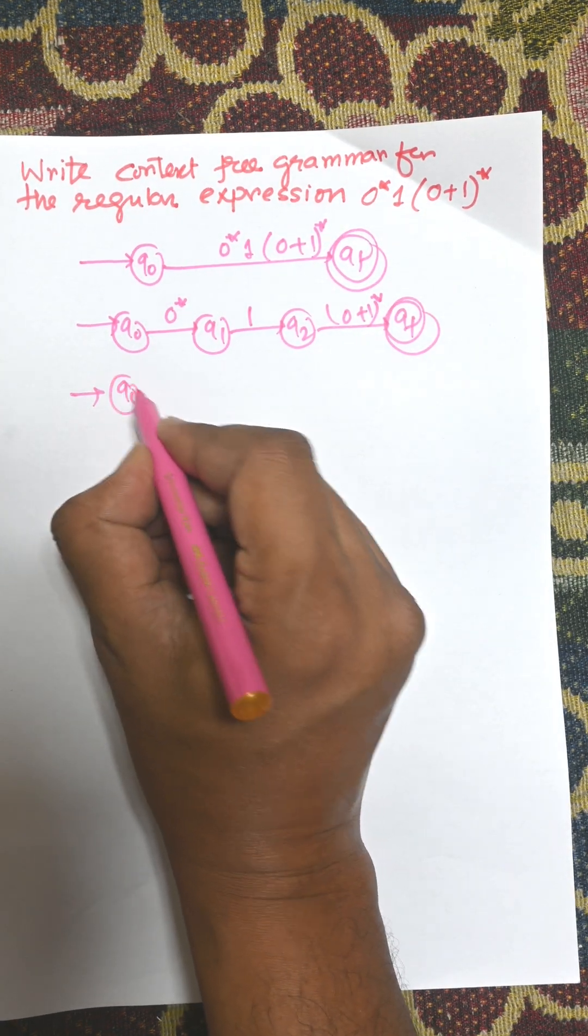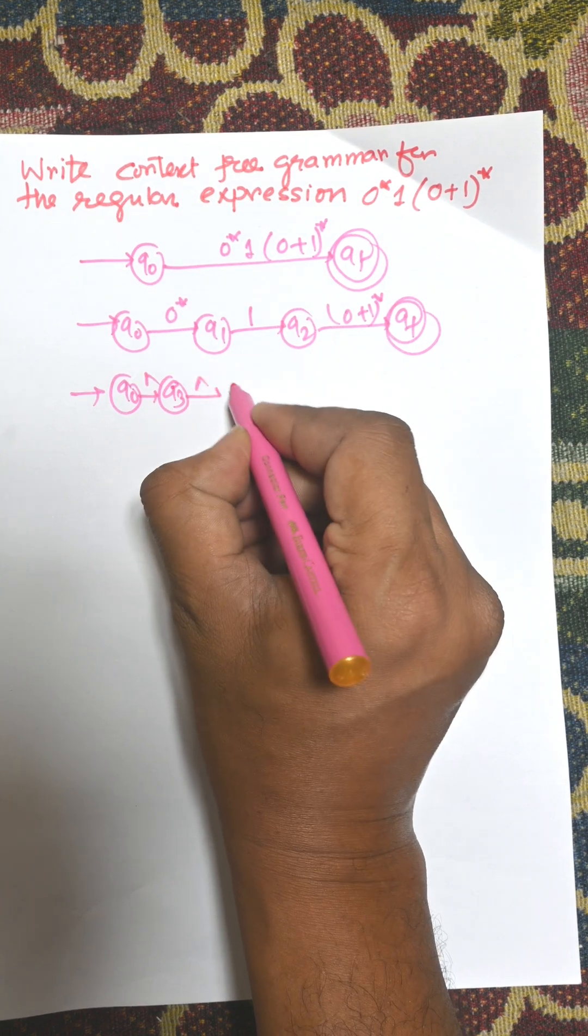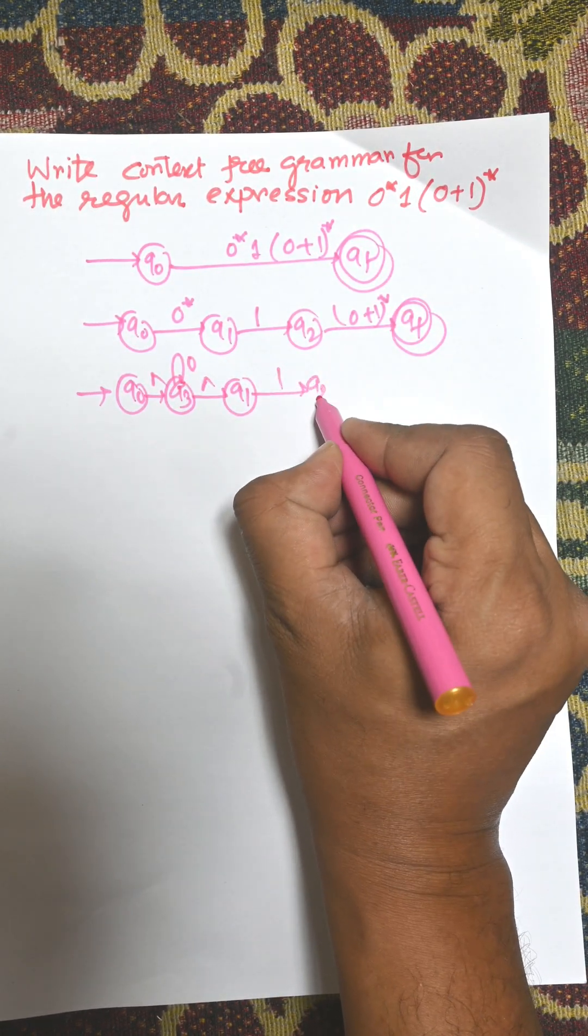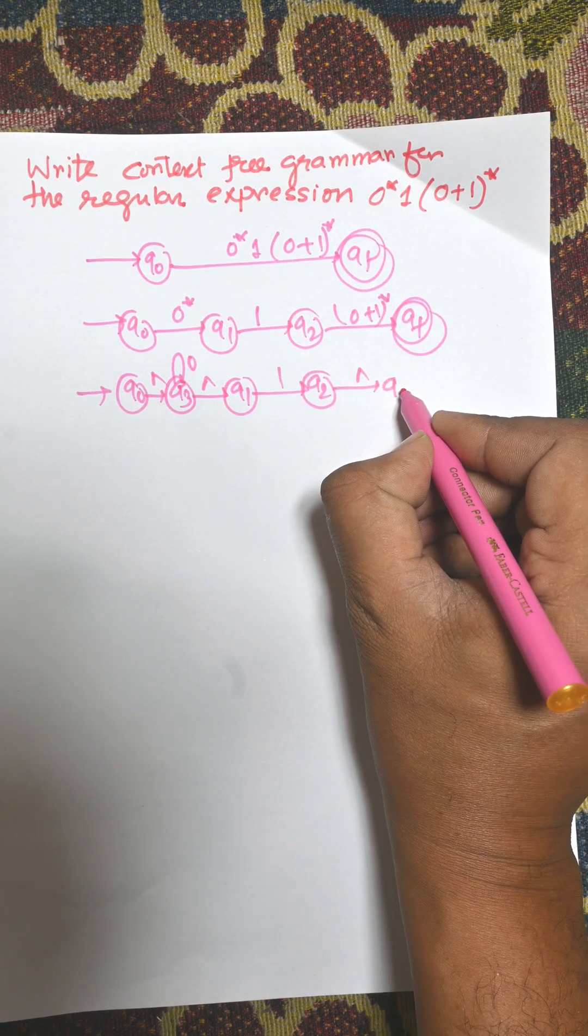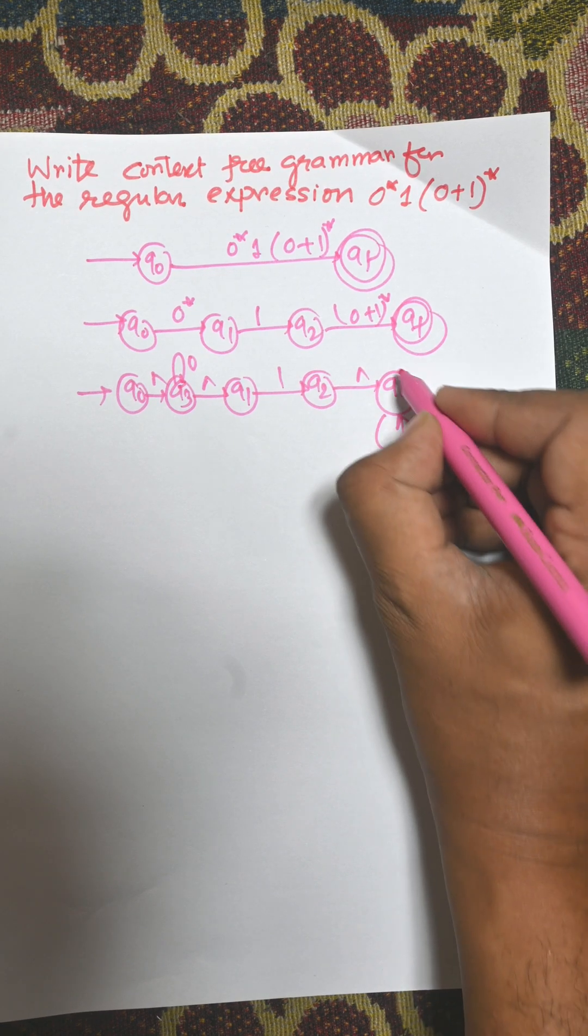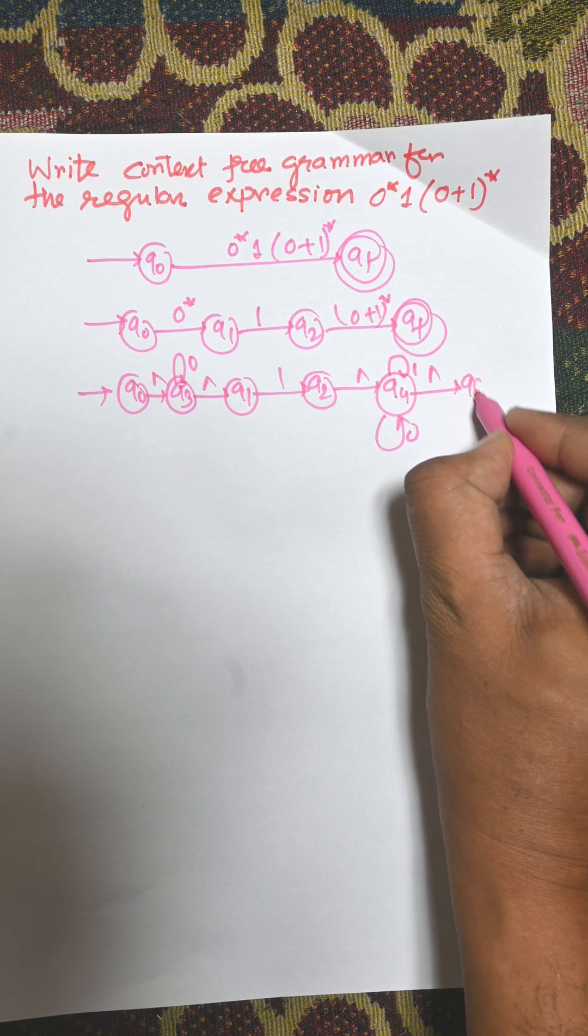For 0 star we need to add a state that is Q3. There is empty, empty Q1 and 0. For Q2, then 0 plus 1 over star means there is an empty symbol and there is another state Q4, and we need to put 0 and 1 means 0 plus 1, and there is another empty to final state.